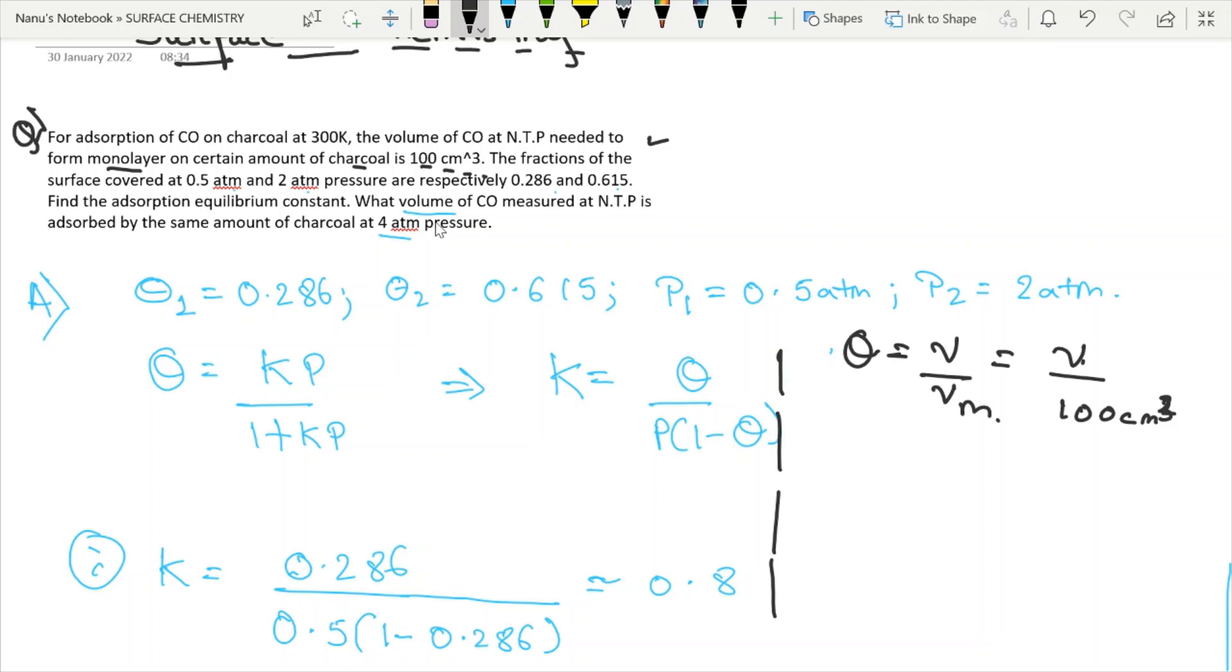What we need to find is V. Theta equals V by Vm equals Kp over 1 plus Kp. We know K, we know P, we know Vm, we only don't know V. So V over 100 cm³ equals K which is 0.8, pressure is 4 atmosphere, over 1 plus 0.8 times 4. If you do this, you will get theta around 0.762.